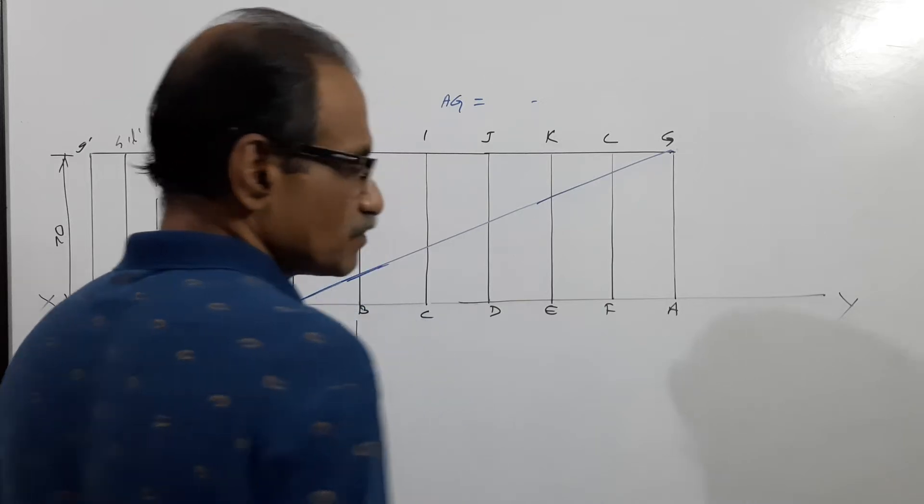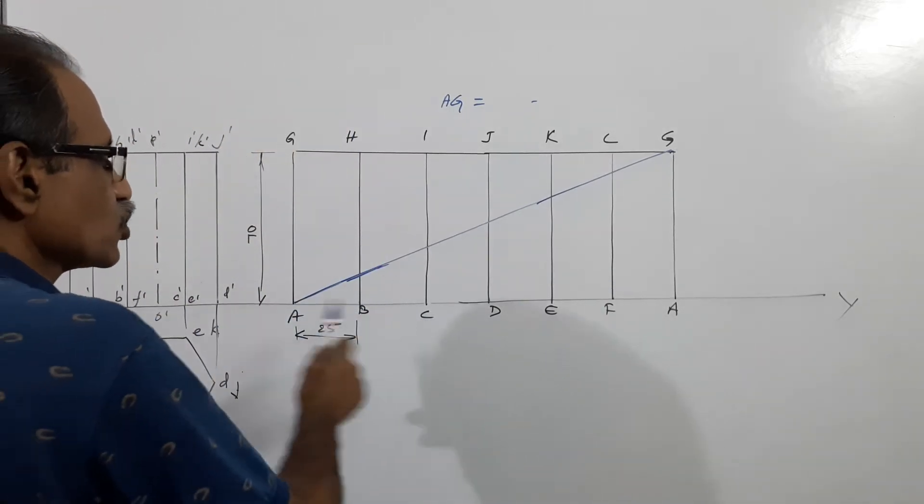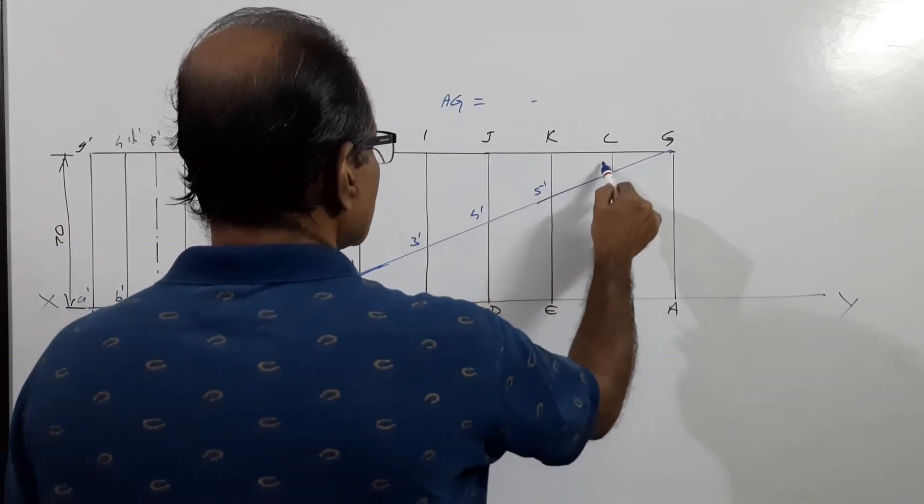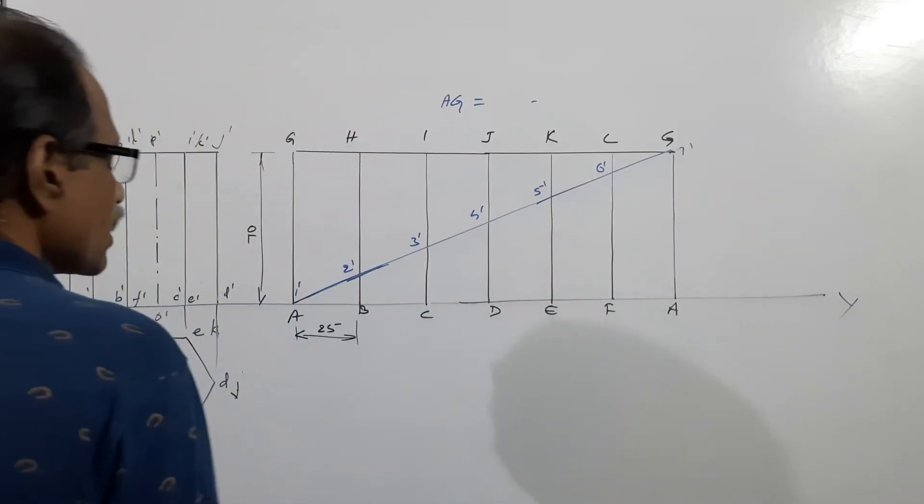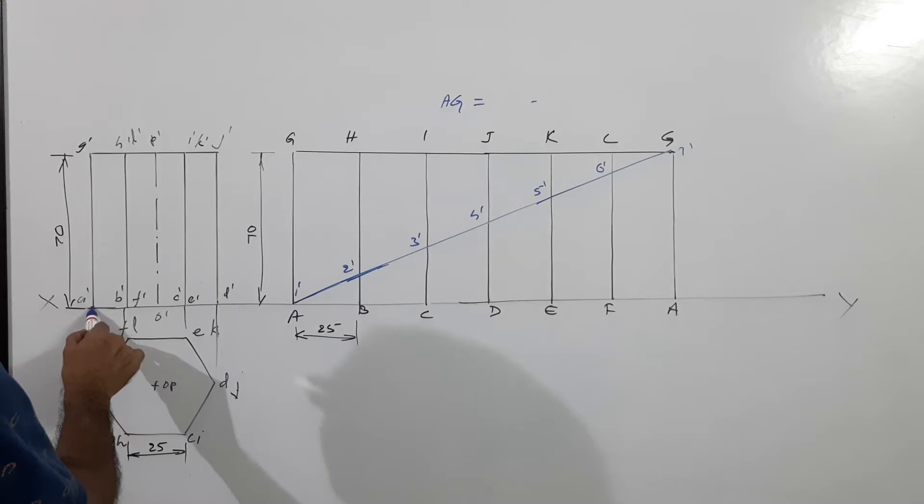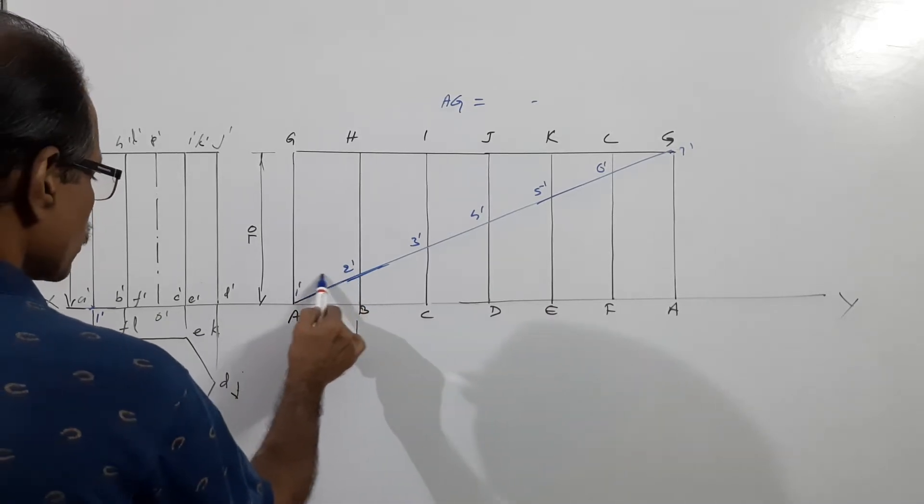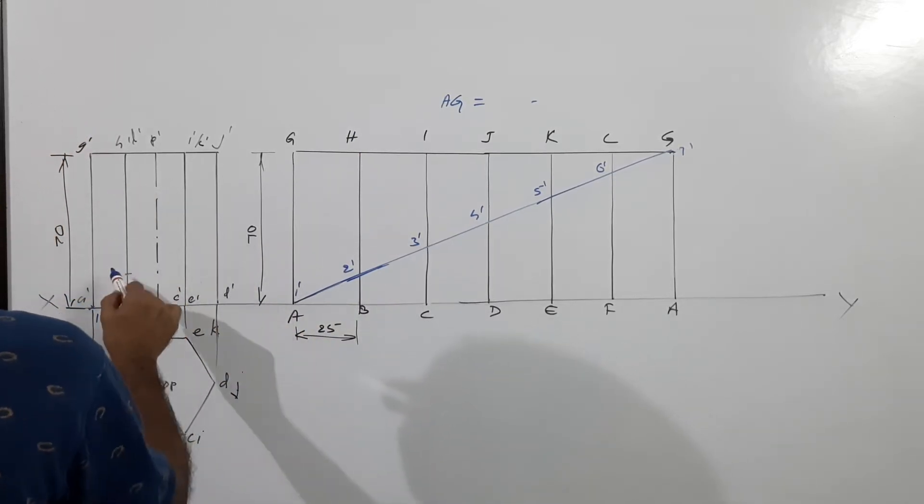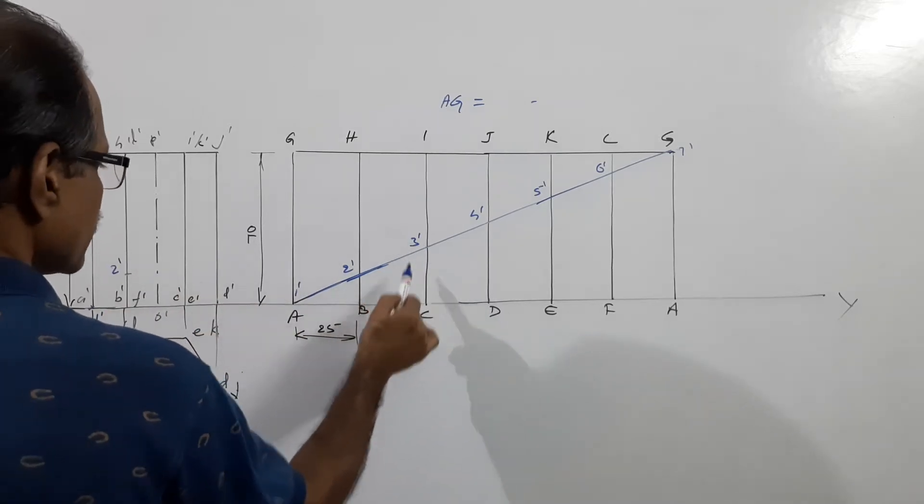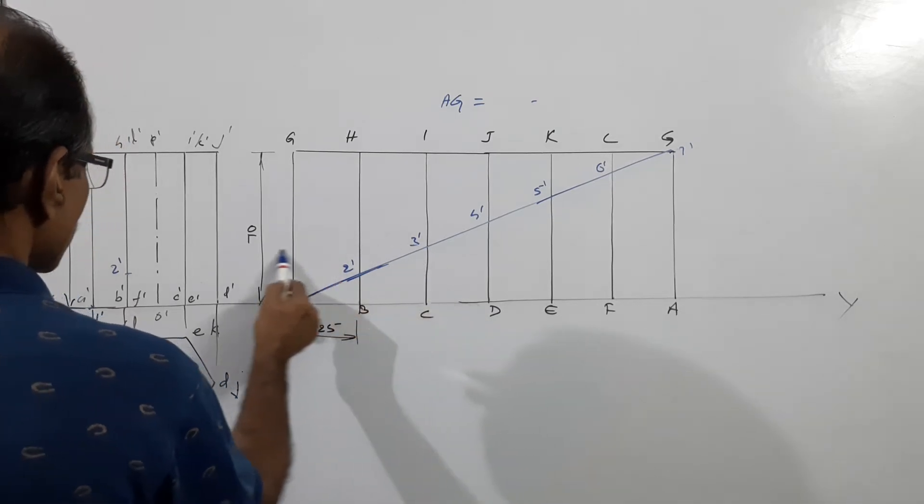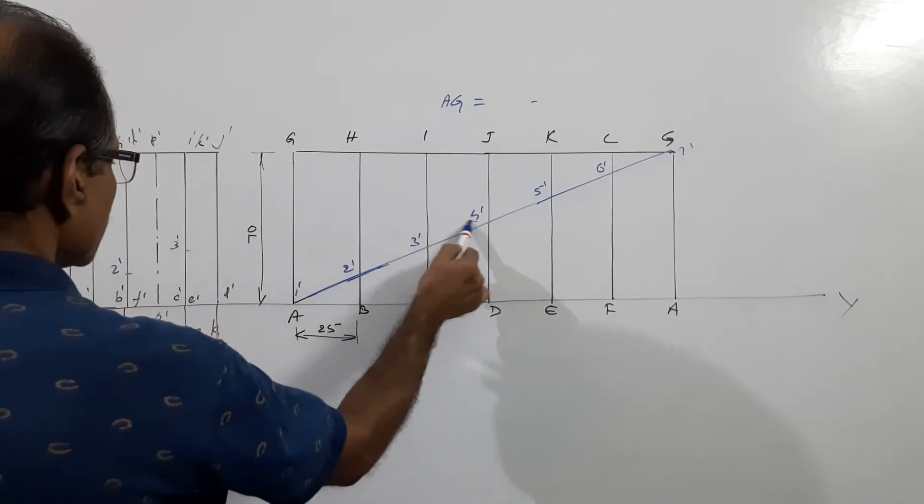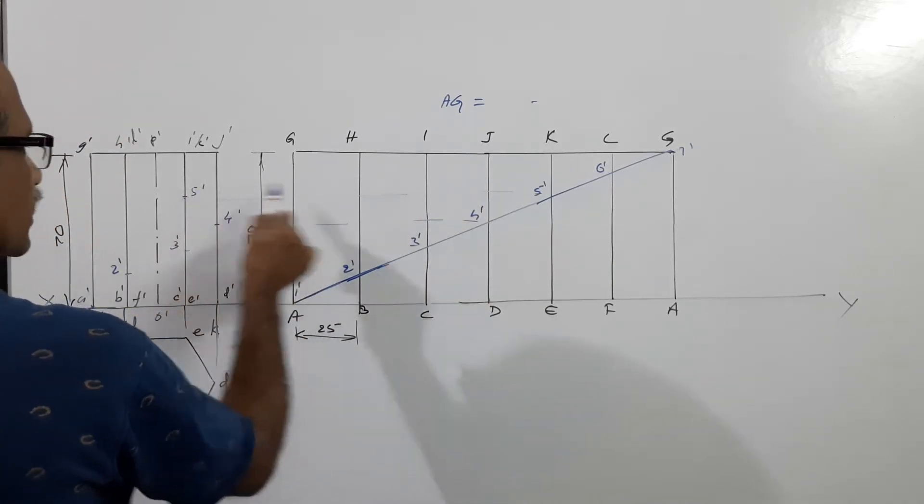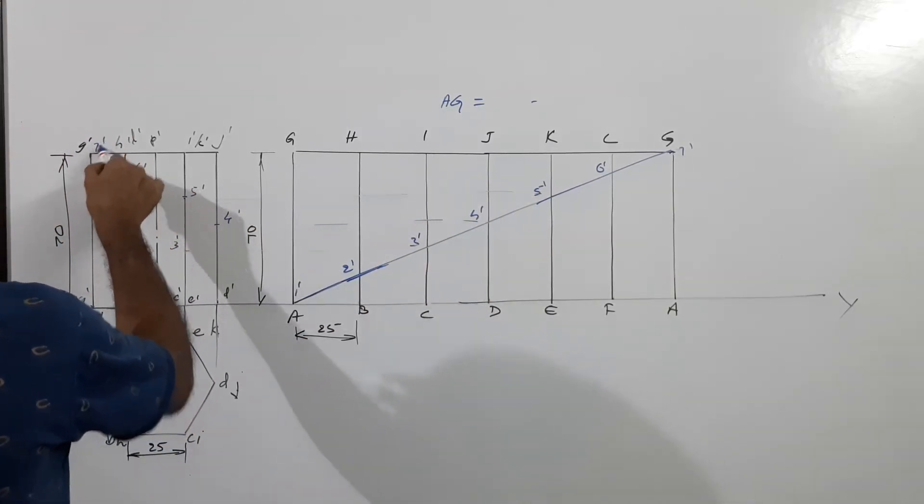Now if you are asked to show this in the plan and elevation, you have to name them one dash, two dash, three dash, four dash, five dash, six dash, seven dash. One is at A dash itself. To get two dash, draw a horizontal line - two is on BH so two dash will be on B dash H dash. Similarly, three dash is on CI, so C dash I dash will have three dash.